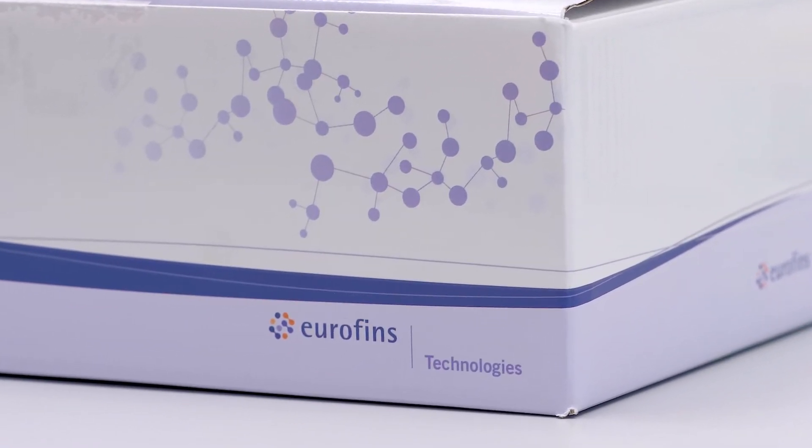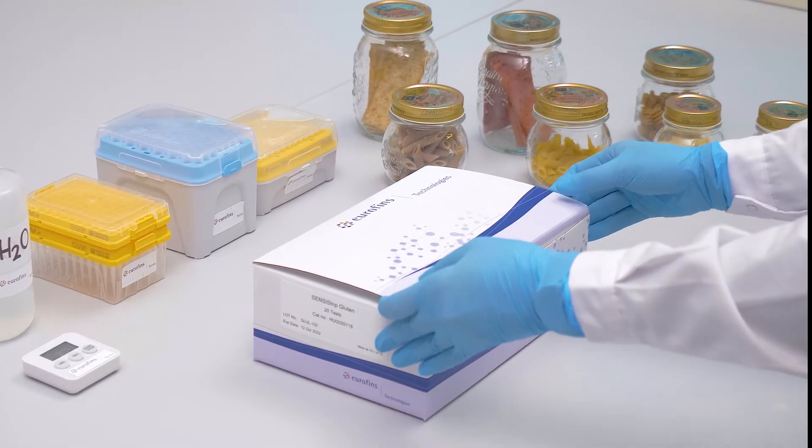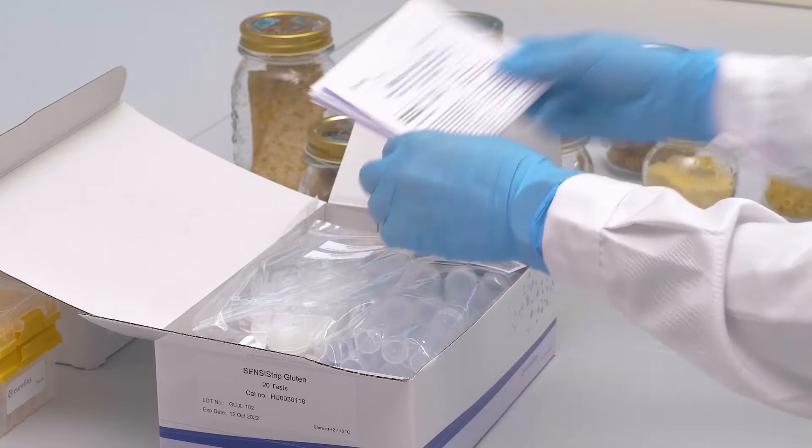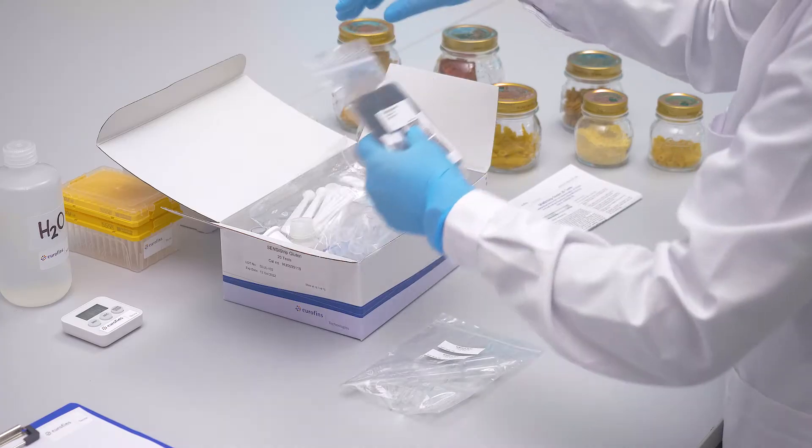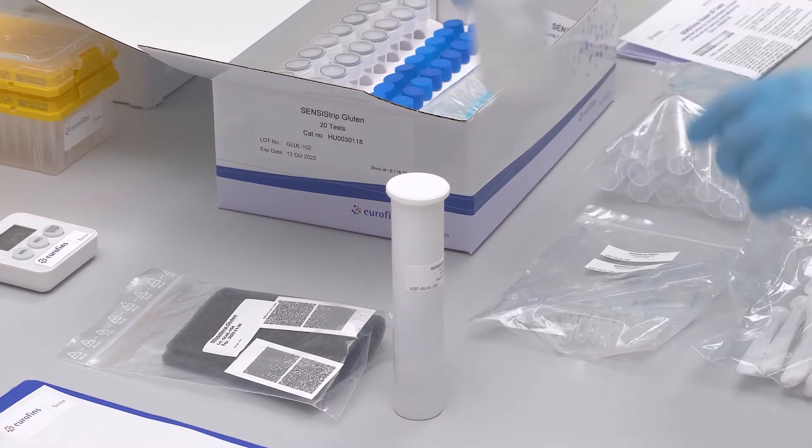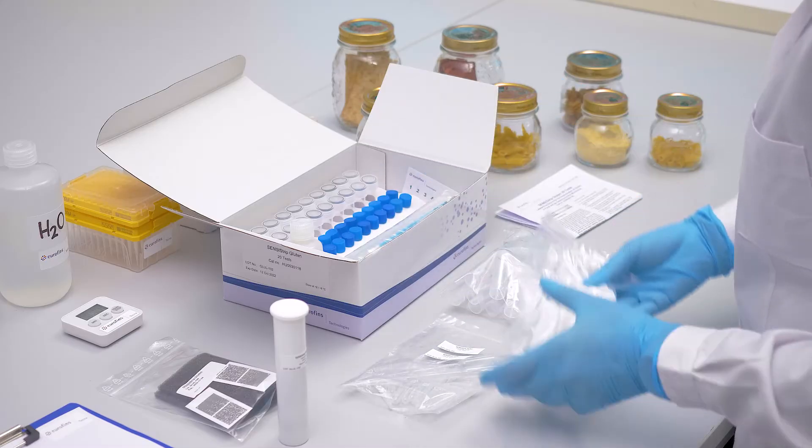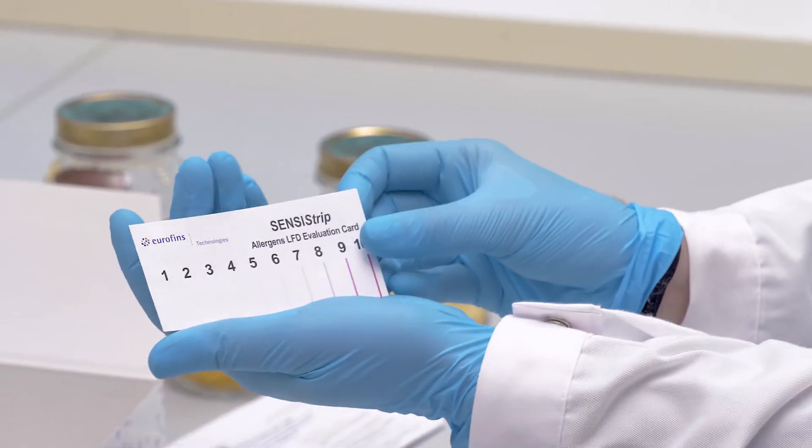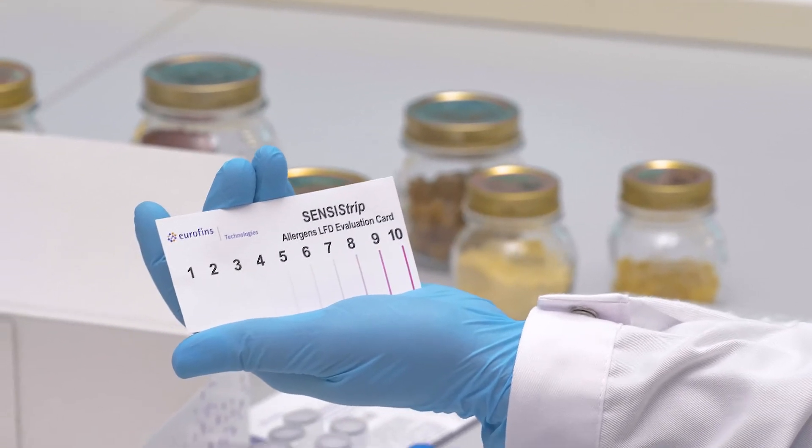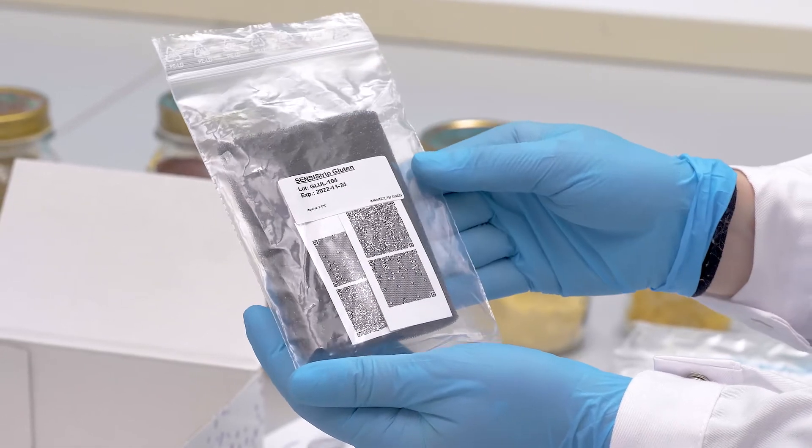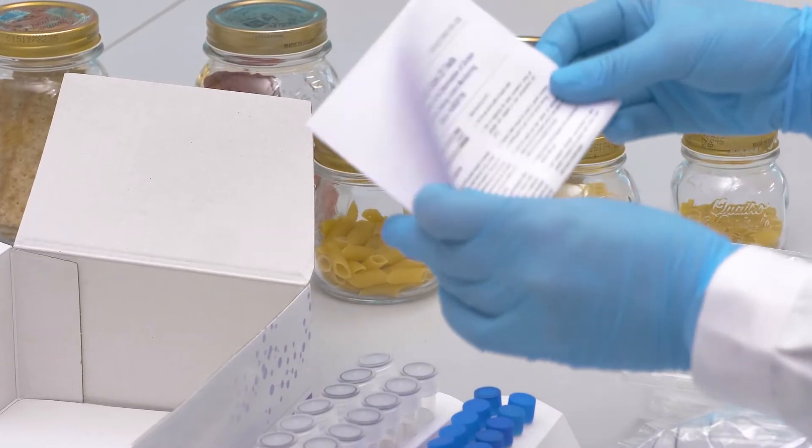The SensiStrip gluten kit includes 20 lateral flow tests for the detection of gluten with a sensitivity of 4 ppm in food. The kit includes what is needed to perform 20 determinations, including the dilution buffer, the consumables, the swabs for surface sampling, an evaluation card for qualitative analysis of results, and a QR code for digital reading, and of course the user manual.